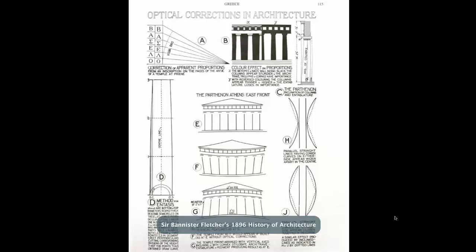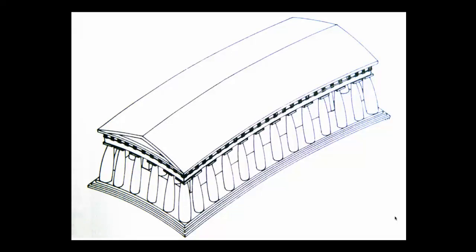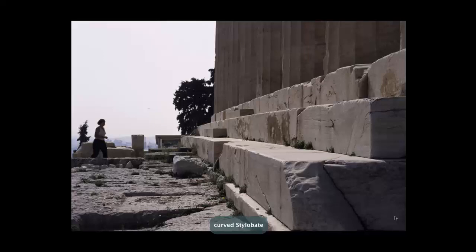Fletcher also gives us a very clear description of entasis — the column swells like a Twinkie under load, swelling fattest in the middle, and he gives a very precise demonstration of that. There's also this optical illusion — a key point in the humanism of the classical orders. It changes its form based on how humans perceive reality. Human perception tends to see things deflected downward, so we compensate by deflecting them upward. Is it built like this? No — this is a caricature, but it's one of the amazing refinements of the Parthenon. If you sight along the stylobate base, you'll see this subtle curve.